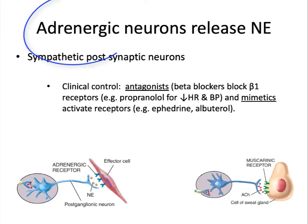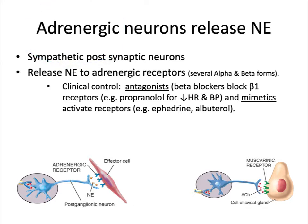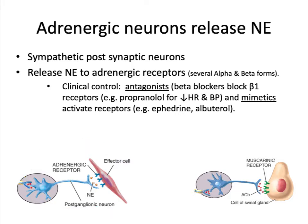Neurons that release norepinephrine are called adrenergic. Only the postganglionic neurons of the sympathetic nervous system release norepinephrine. Receptors on the target organ bind to the norepinephrine — this is usually stimulatory. A clinical application is that we can block the binding of norepinephrine to reduce the excitatory effect. For example, beta blockers lower heart rate because they block the binding of norepinephrine by heart muscle cells. Albuterol opens airways by blocking the binding of norepinephrine by smooth muscle cells in the respiratory passages, inhibiting smooth muscle contraction.